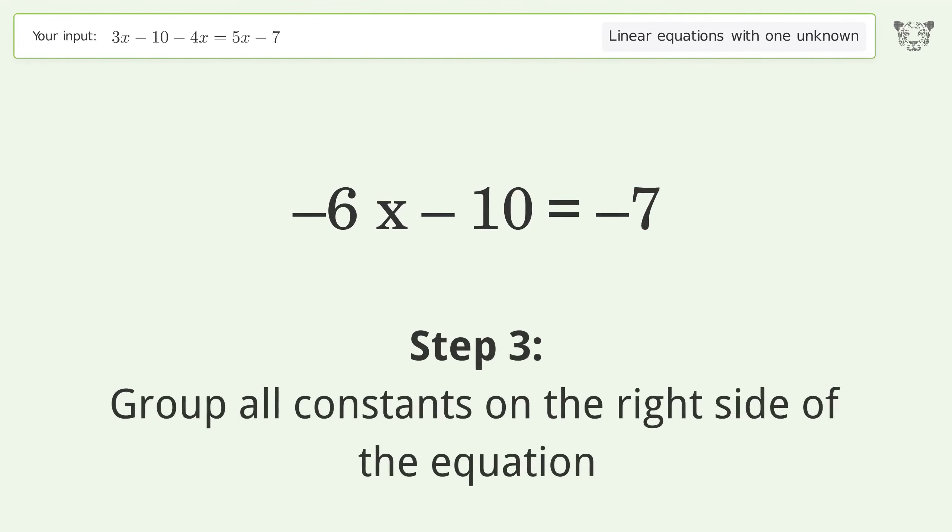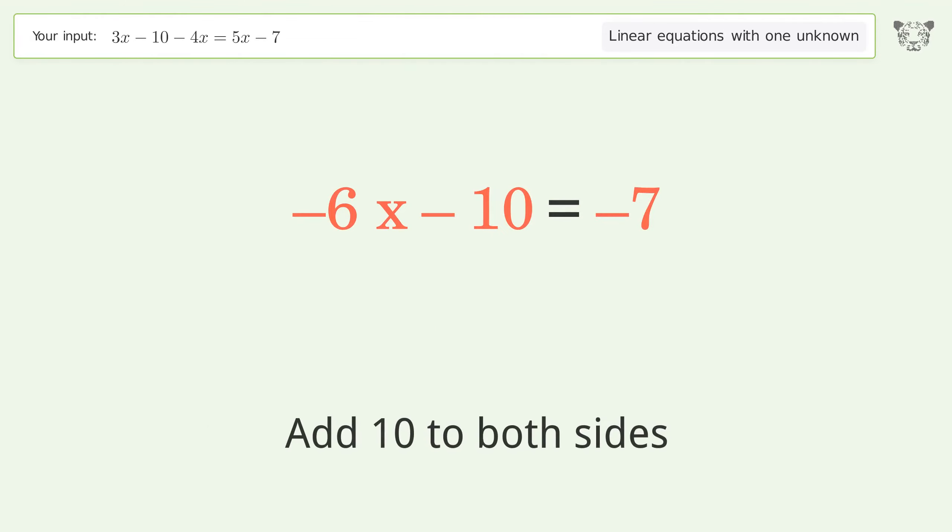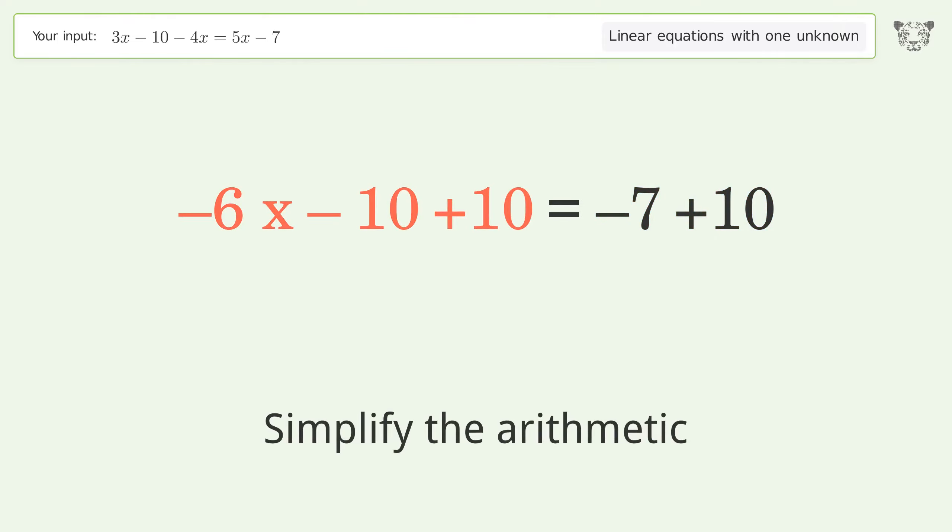Group all constants on the right side of the equation. Add 10 to both sides. Simplify the arithmetic.